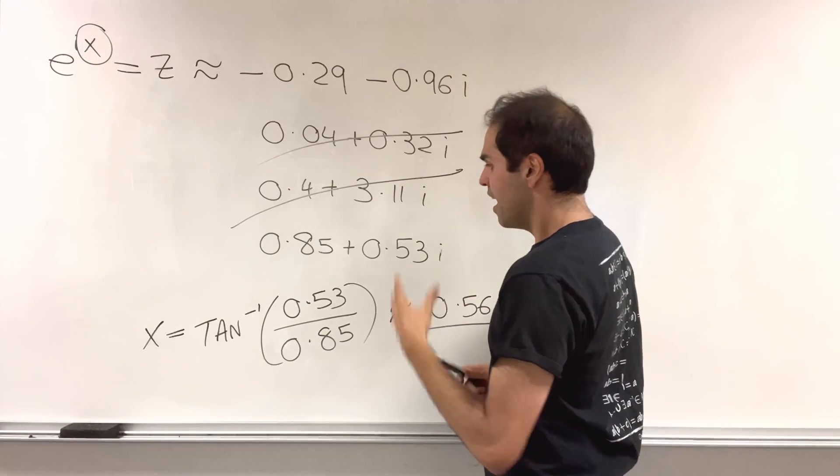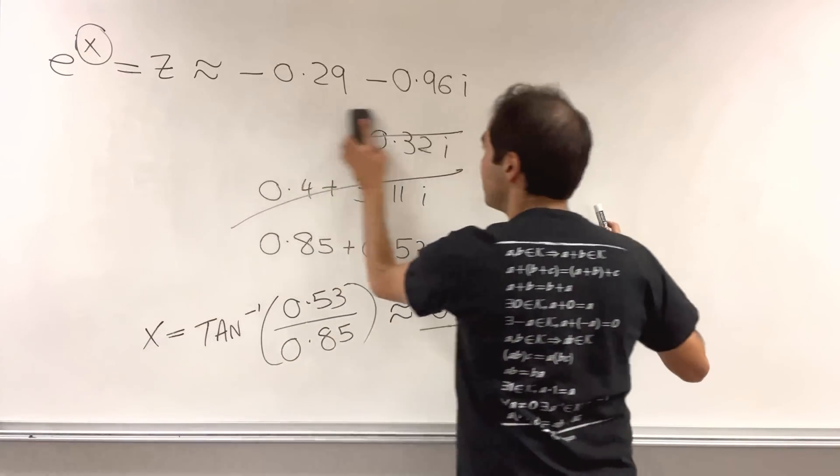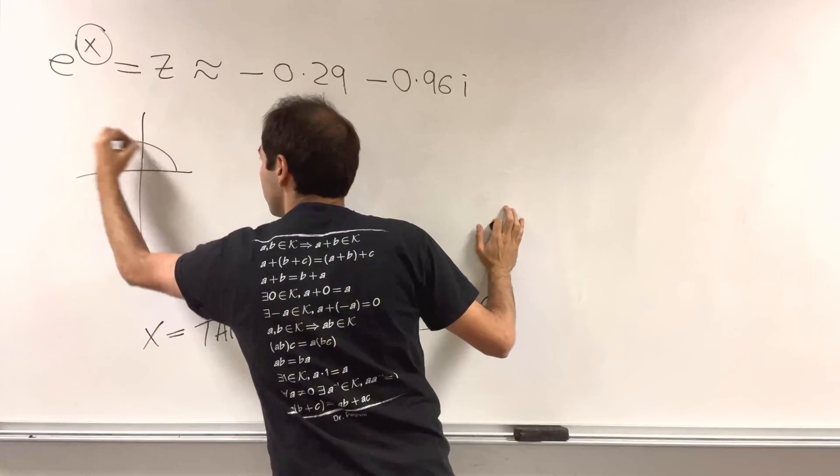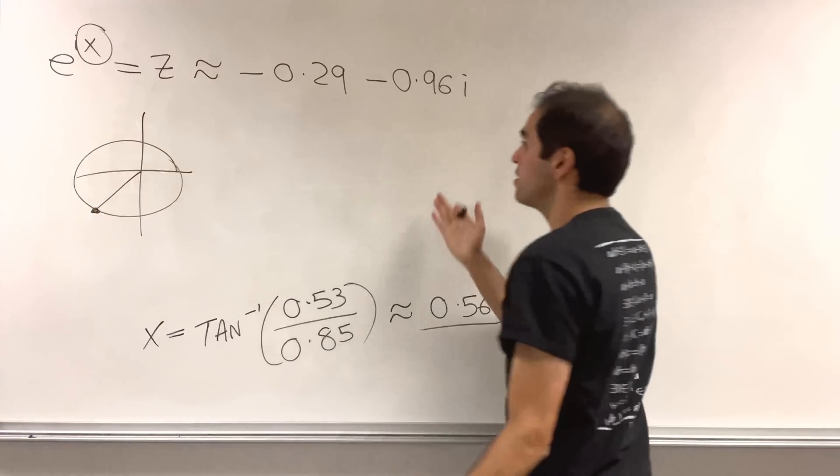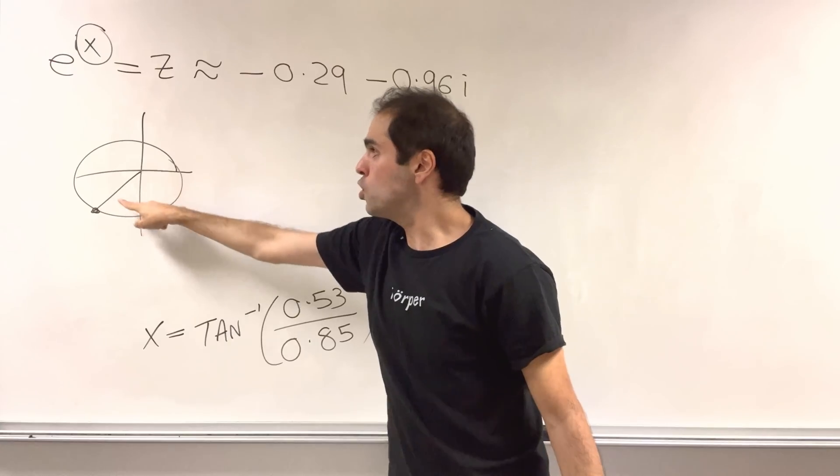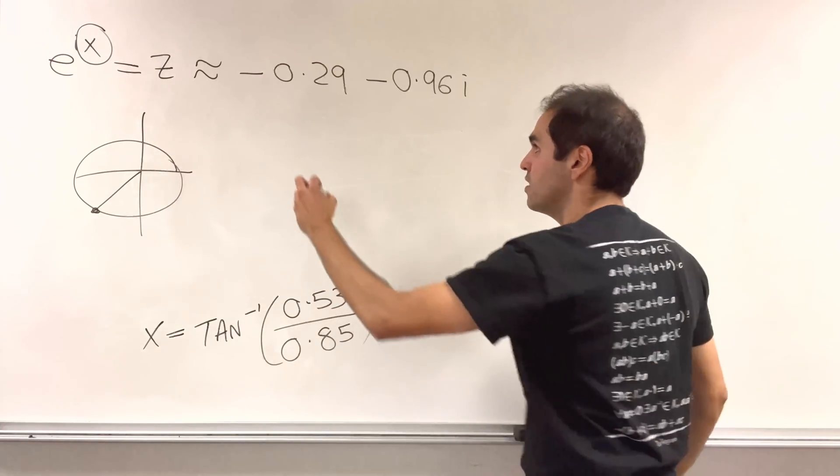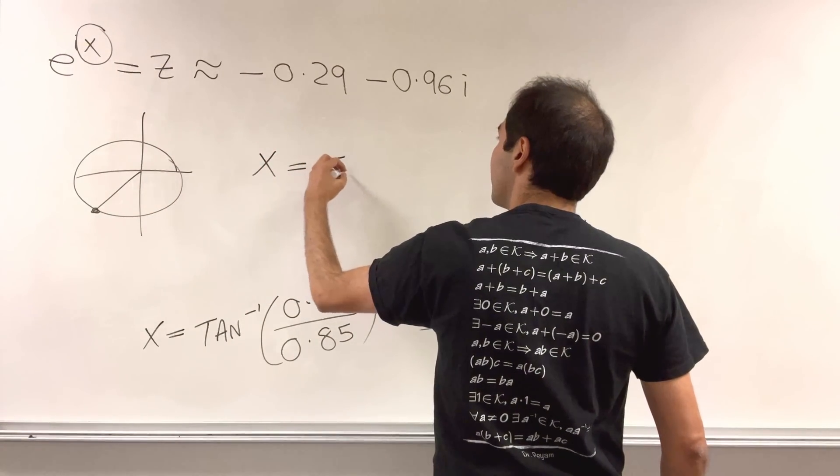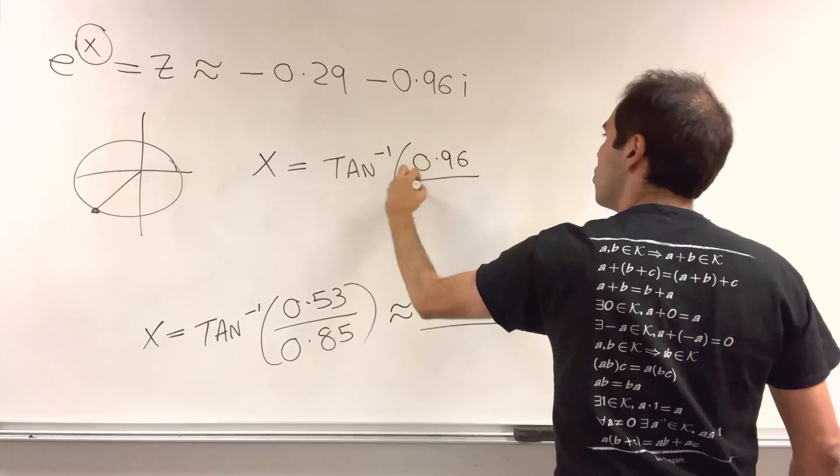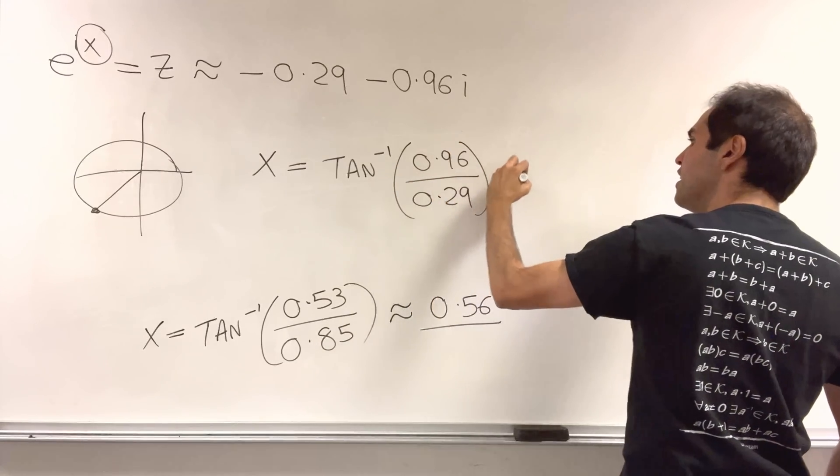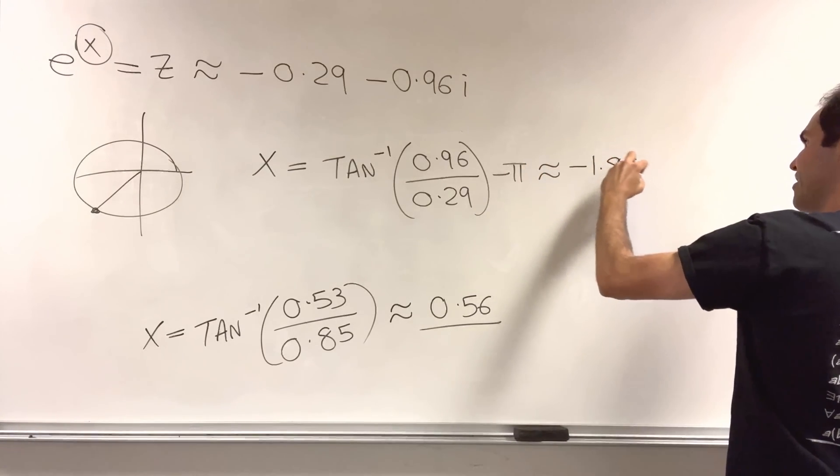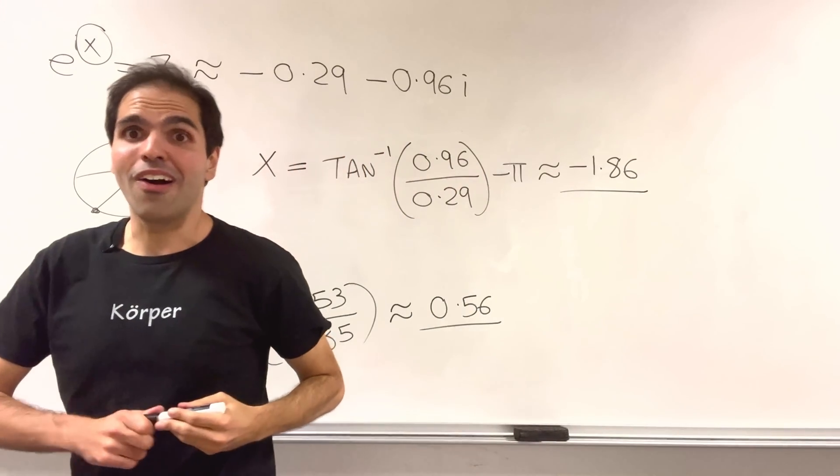So that's one thing. And the other one, we just have to be a little bit careful here, because this root lies in the third quadrant. But that's not a big problem. All we'll do is arc tangent of y over x and subtract pi from it, just for it to be in the third quadrant. And we then get x is arc tangent of, in this case, 0.96 over 0.29 minus pi, and that gives us roughly minus 1.86, which is the other root we're talking about.